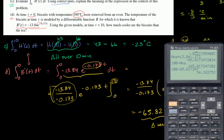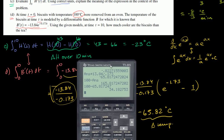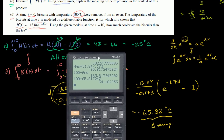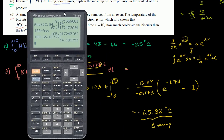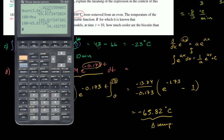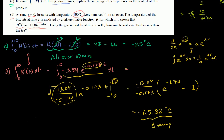We already knew that the temperature of the tea after 10 minutes is 43 degrees. The biscuits are at 34 degrees, the tea is at 43 degrees. So doing 43 minus the biscuit temperature, we see that the biscuits are 8.82 degrees Celsius cooler than the tea. And we're done with part D as well.